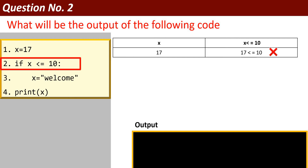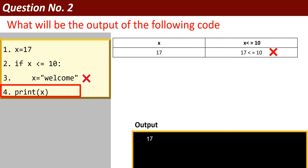In case of false, the statements following the if — whether one statement or a bundle of statements — will be ignored. If the condition is false, all those statements will be ignored. So x equal to 'welcome' will be ignored, and print x will print the value of x, which is 17.